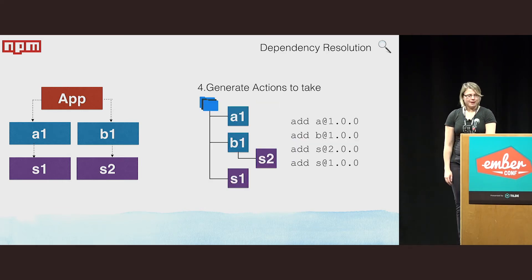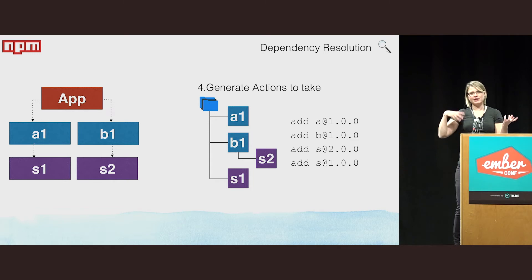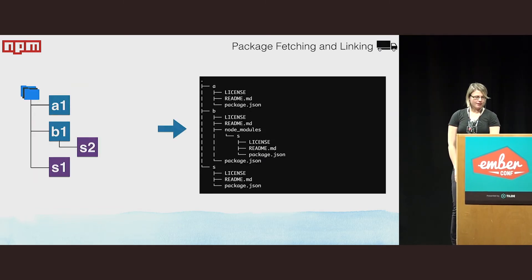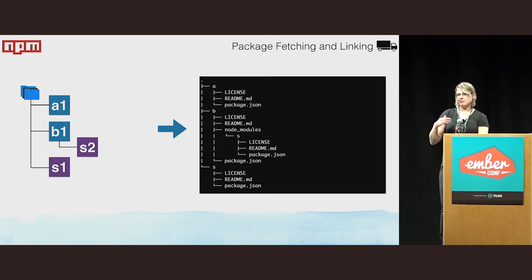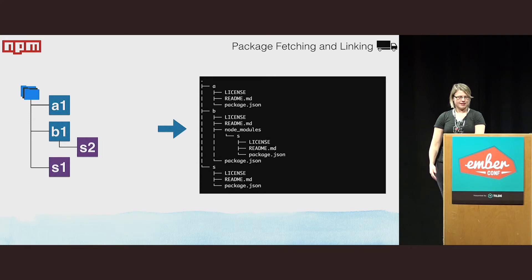The last bit NPM does is generate the actions to take: it compares the current tree with the ideal tree and determines what it needs to do to get from one to the other. In this case it's easy — we had nothing and we have four new nodes to add. Then we fetch the packages from the registry, store them in the global cache, and link them to our local node_modules folder.